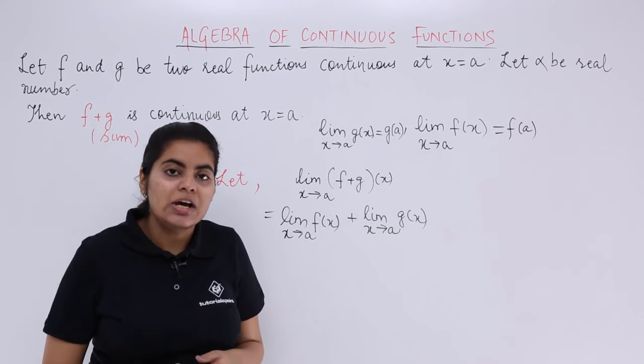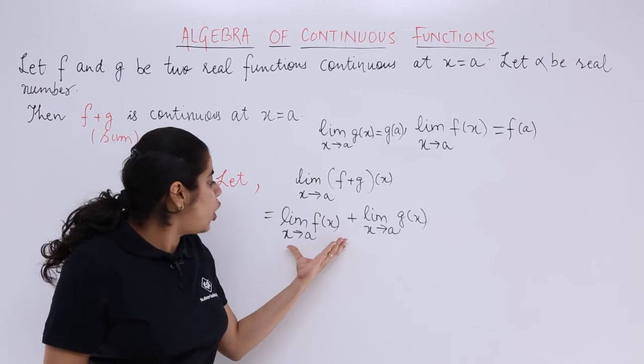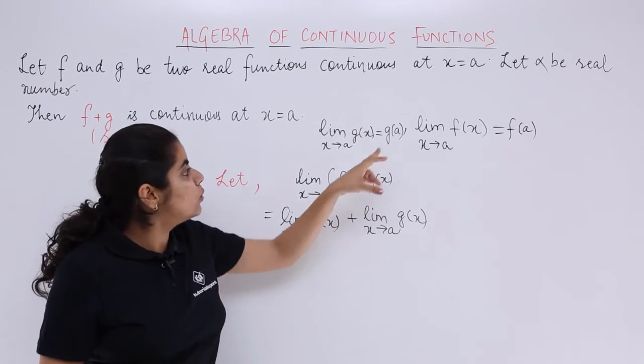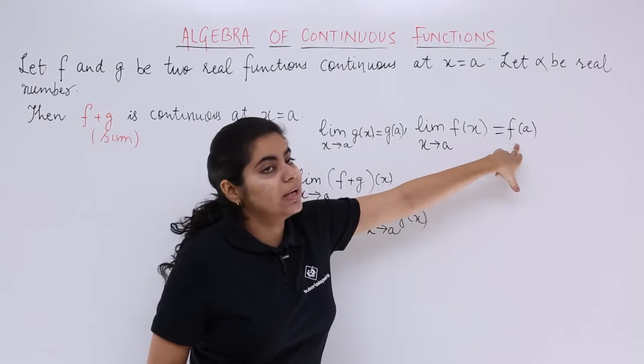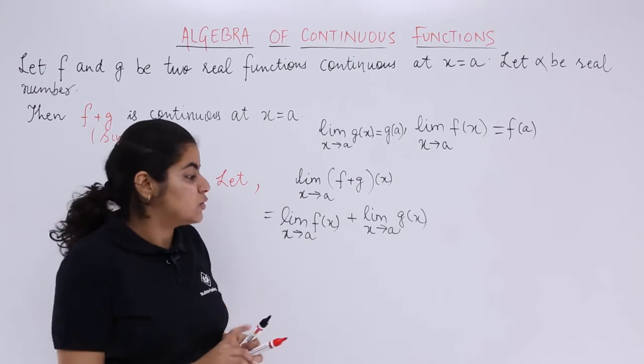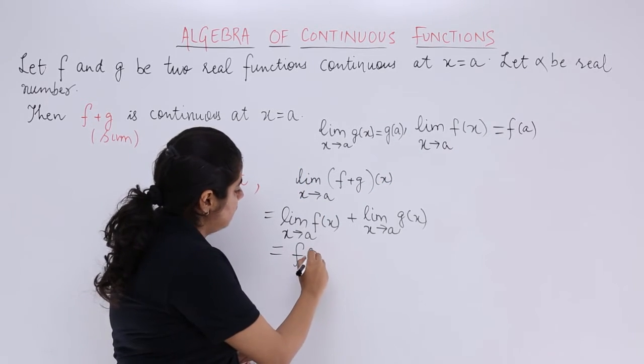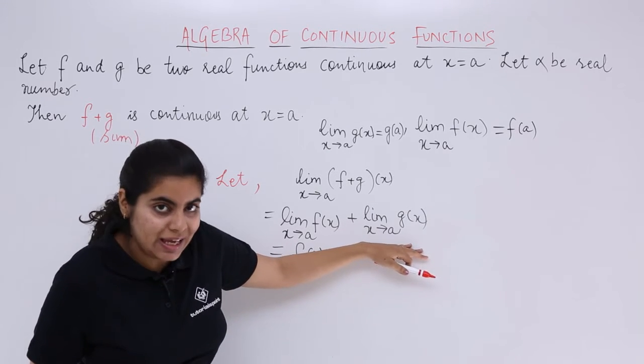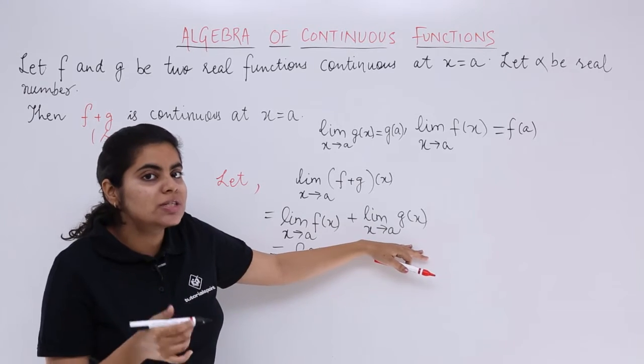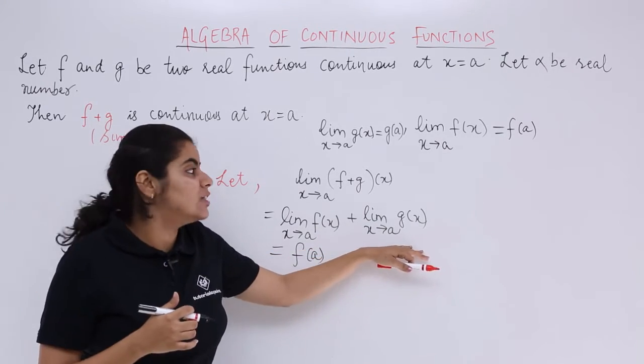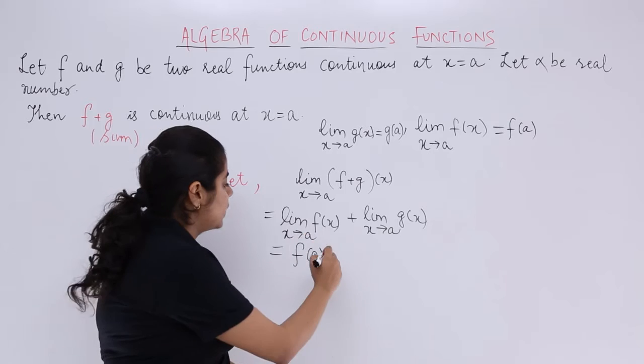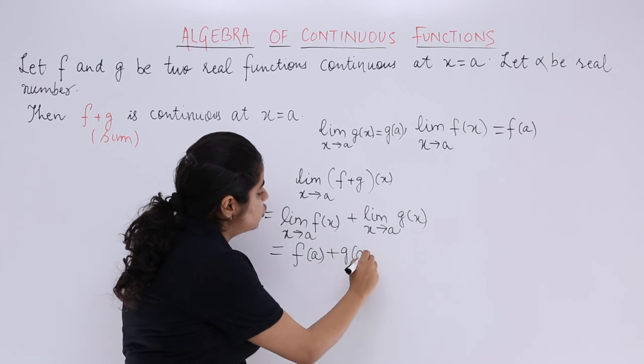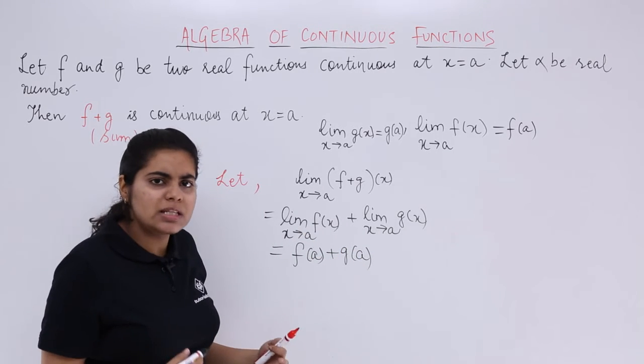This is clear, right? Now, what is the value of limit fx when x tends to a? Limit fx when x tends to a is equal to f of a. So this basically is equal to f of a. Similarly, what is the value of limit gx at x tends to a? It is equal to g of a. So these two things are for sure.